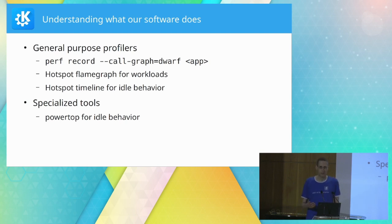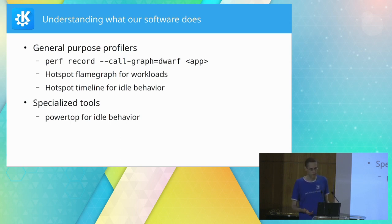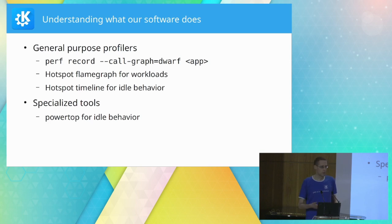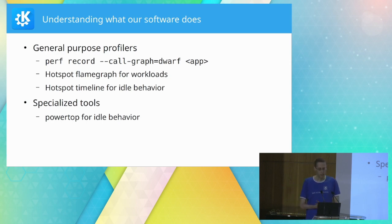With any optimization, the first step is understanding what the software actually does. Because what it's supposed to do, what we think it does, and what it actually does are often three different things. On Linux, our go-to tool is the perf profiler. We run perf record with the application, perform some typical operations, get the profile file out, open it in Hotspot, and look at the details.